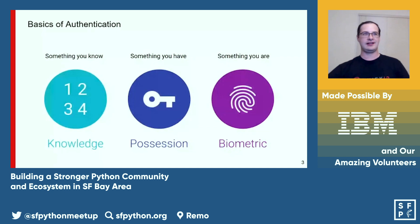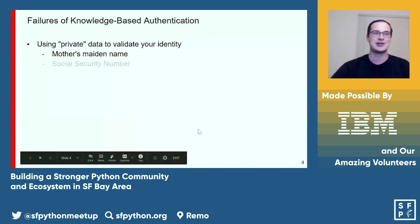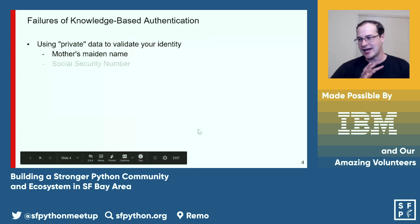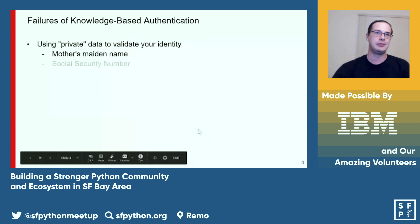Knowledge-based authentication is the notion of using private data to authenticate your identity — things like your mother's maiden name, social security number, addresses, first grade teacher's name. This entire class of authentication is susceptible to data breaches, obviously.